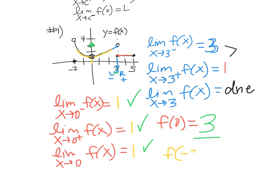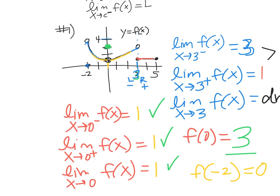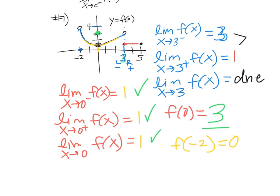What is f of negative 2? f(negative 2) equals 0. If I were to take the limit on the right side of negative 2, the limit would be 4. There's no left-hand limit because the graph doesn't exist on that side. So the limit is 4 on the right-hand side, there is no left-hand limit, but the value is 0 there. That was Part A — let's do Part B now.